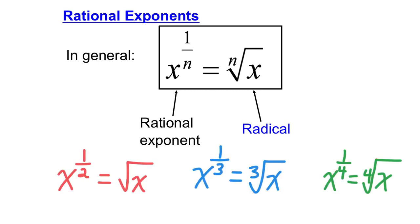So, using actual numbers here, if n was a 2, 1 over 2 as the exponent corresponds to a square root. You could put a 2 here, but generally mathematicians don't put a 2 there — if you see this symbol, it means it's a square root or second root. x to the 1 over 3 would be the cubed root — there's a 3 there in the root symbol. And if you have x to the 1 over 4, you are taking the fourth root of your number.